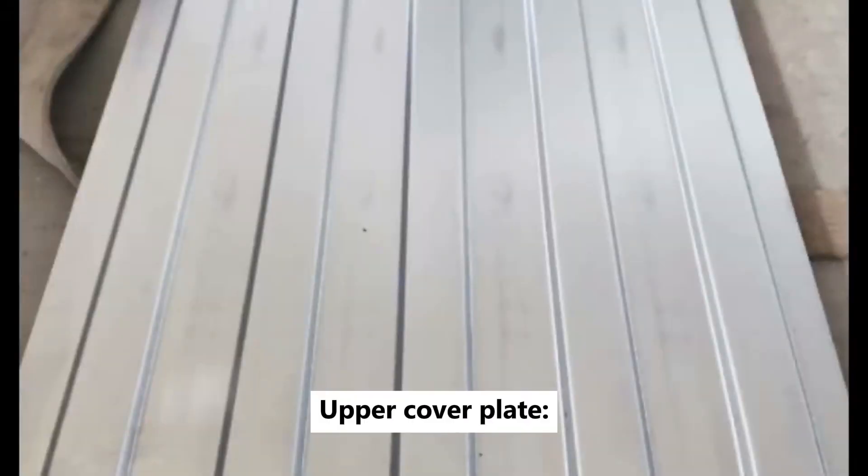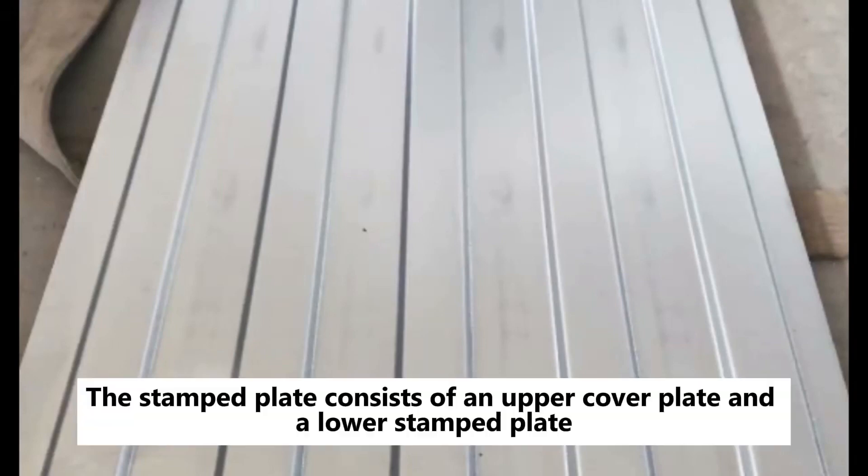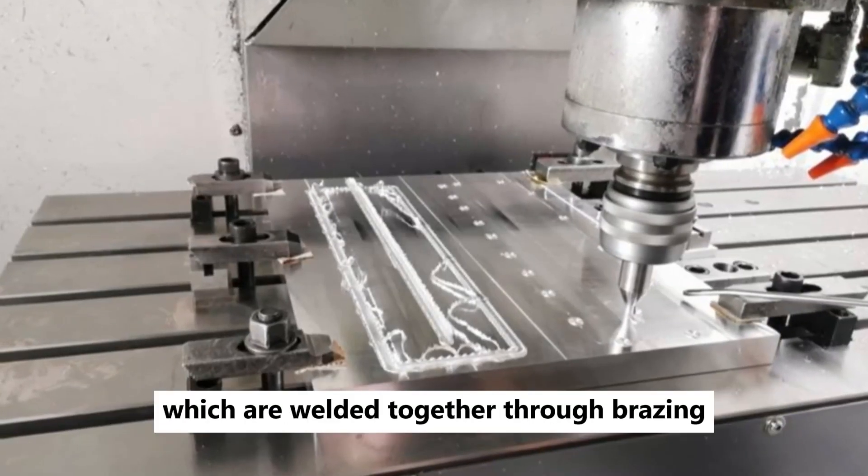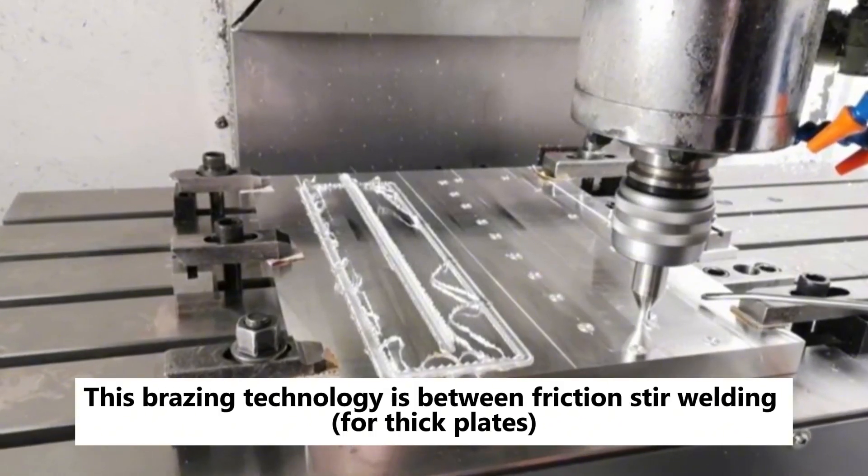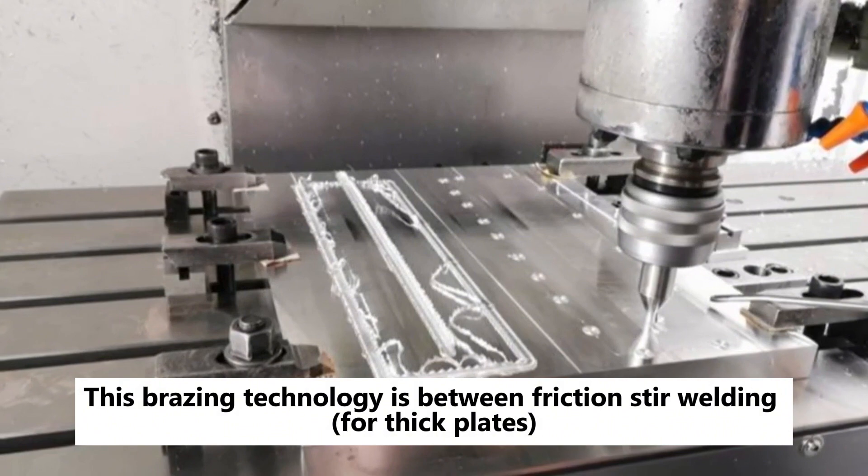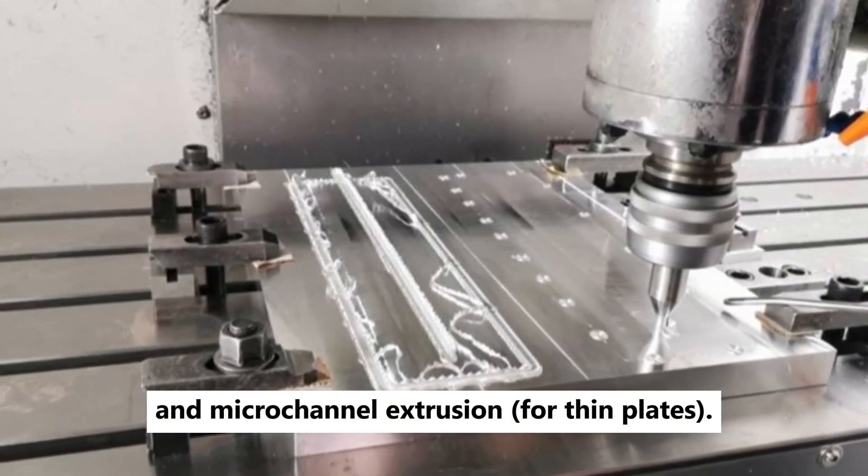2. Upper cover plate. The stamped plate consists of an upper cover plate and a lower stamped plate, which are welded together through brazing. This brazing technology is between friction stir welding for thick plates and micro-channel extrusion for thin plates.